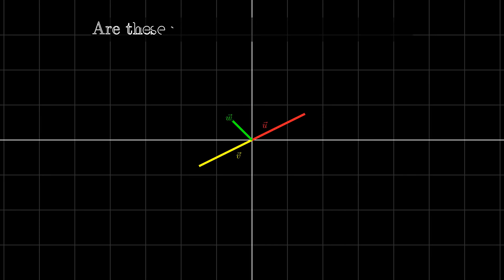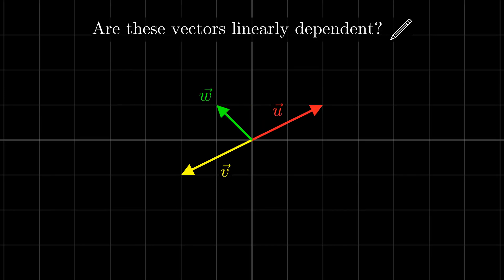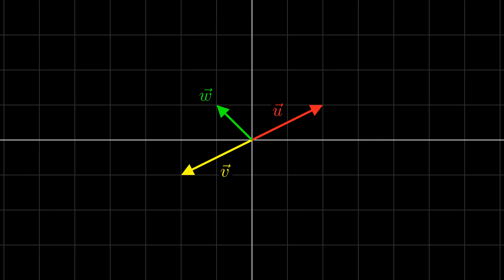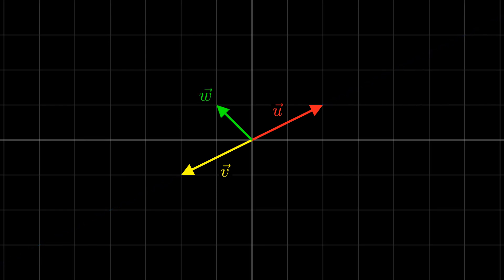Let's do another one. Are these vectors linearly dependent? Currently, the span of these vectors is once again the whole plane. If we were to remove w, the span would change because the span of u and v is just this line. Thus, it seems like this set is linearly independent. However, remember that the definition of linear dependence said that a set of vectors is linearly dependent if there is any vector in the set which, once removed, doesn't change the span. If we remove u, the span of these two vectors is still the whole plane, so it turns out that these vectors are, in fact, linearly dependent.